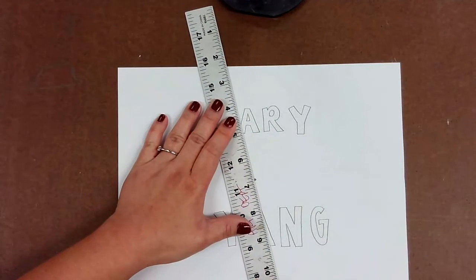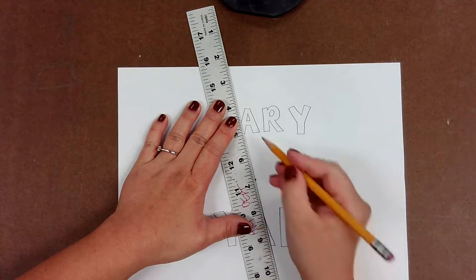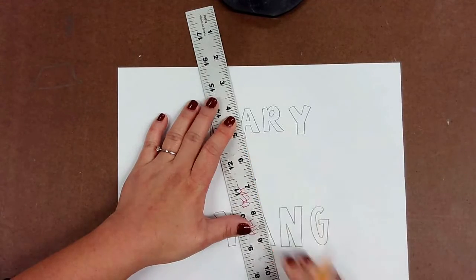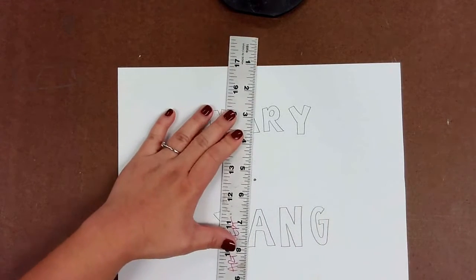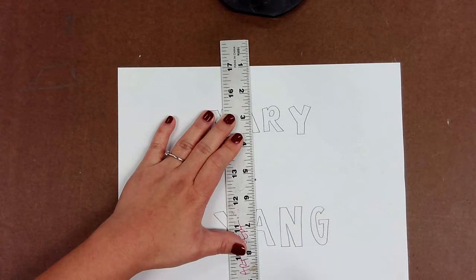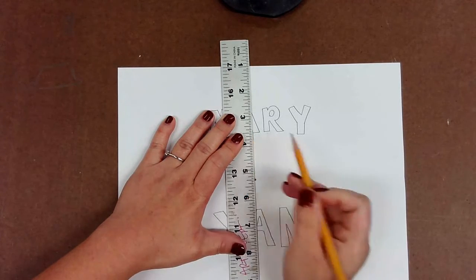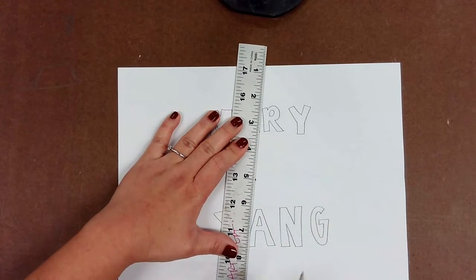So I'm going to go ahead and match up my corners with the vanishing point as best as I can, and I'm going to go ahead and connect those lines to make my letters look three-dimensional.